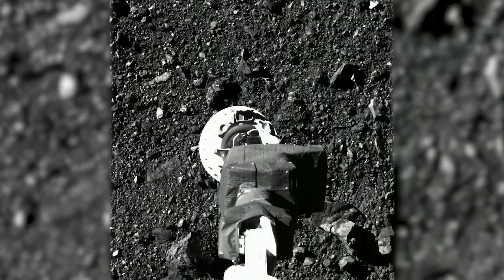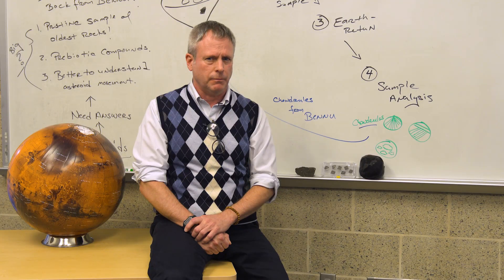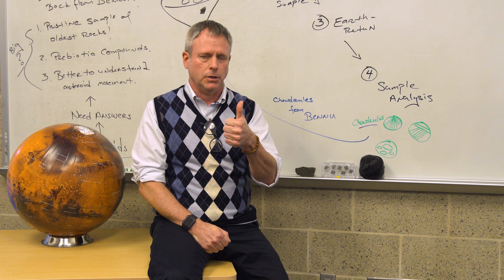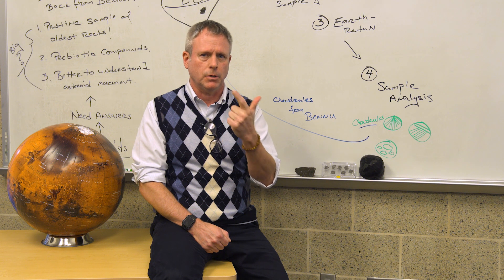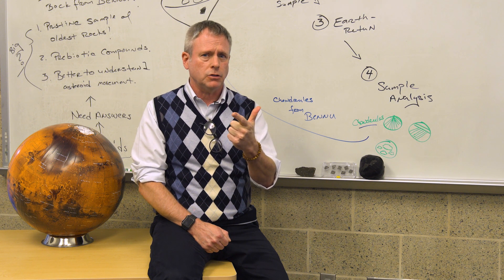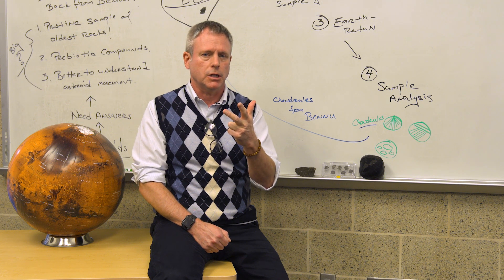By actually bringing home a sample of an asteroid, in this case carbonaceous chondria from asteroid Bennu, we can better understand the origin of planetary systems, the first materials to form, the origin of life itself, and better predict when an asteroid is going to hit the planet.